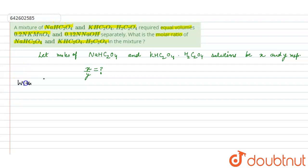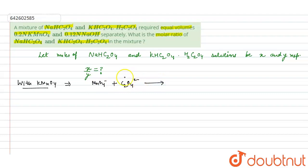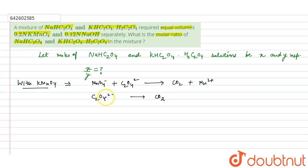MnO₄⁻ from KMnO₄ reacts with C₂O₄²⁻ (oxalate ion). The oxalate gets oxidized to CO₂, and MnO₄⁻ gets reduced to Mn²⁺. For NHC₂O₄, C₂O₄²⁻ is converted to CO₂. Balancing: there are four oxygen atoms on the right and two on the left, so we write two water molecules.